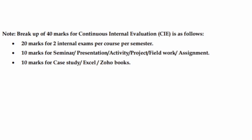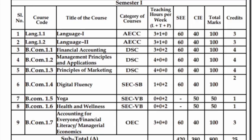The 40 marks are for Continuous Internal Evaluation. This is divided as follows: two internal examinations are conducted by the college — 10 marks for one internal exam and 10 marks for another, totalling 20. The remaining 20 marks come from seminars, presentations, projects, activities, case studies, and similar activities. So total 40 marks for Continuous Internal Evaluation, and the remaining 60 marks are for the Semester Examinations.